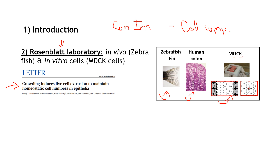Imagine you are on a bus or in the subway and there are too many people — you decide to leave because there's no more space. The same thing happens with cells: there is no more space, so they end up being extruded, they leave the epithelium, and they end up being killed. This seems to be an important mechanism to regulate cell numbers, which is why the title of the paper is 'Crowding-Induced Live Cell Extrusion to Maintain Homeostatic Cell Numbers.'